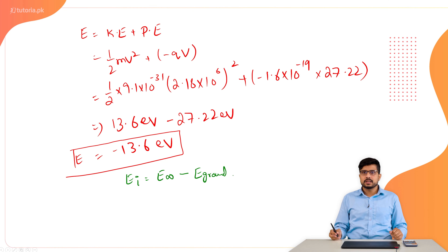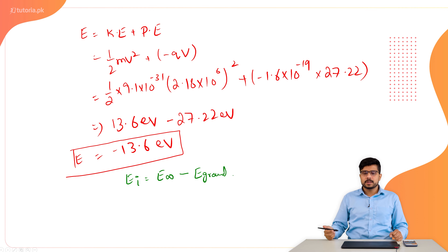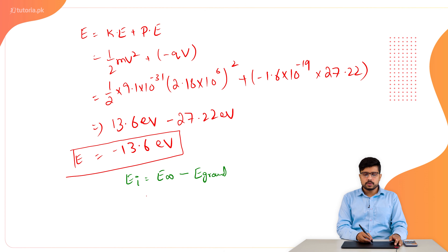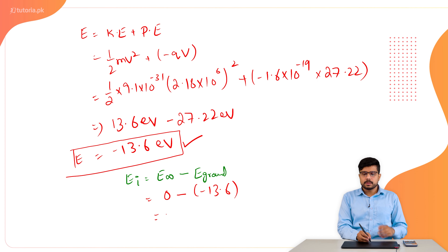Ionization energy Ei equals E∞ minus E_total. Since the energy at infinity is equal to zero, we have 0 minus (−13.6), which gives us 13.6 electron volt. So the ionization energy is equal to 13.6 electron volt.